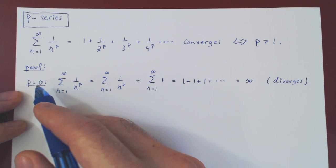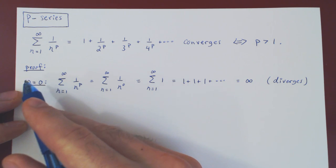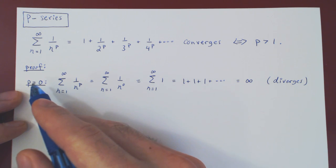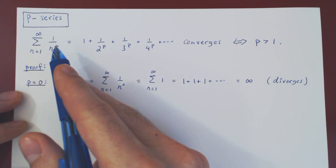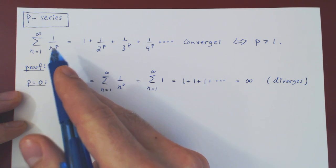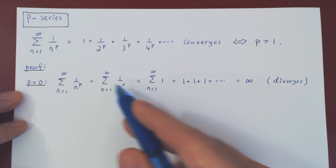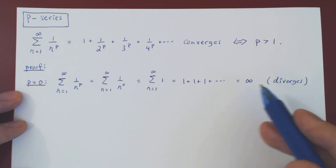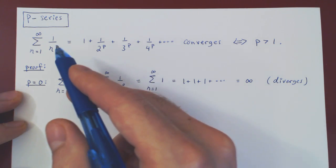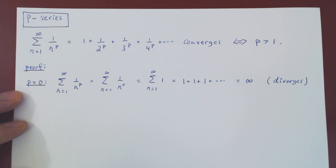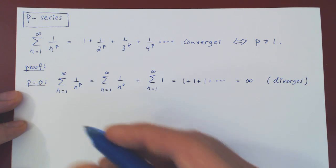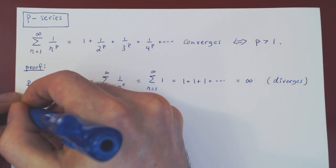Now let's look at the general case when p is strictly less than 0, therefore negative.